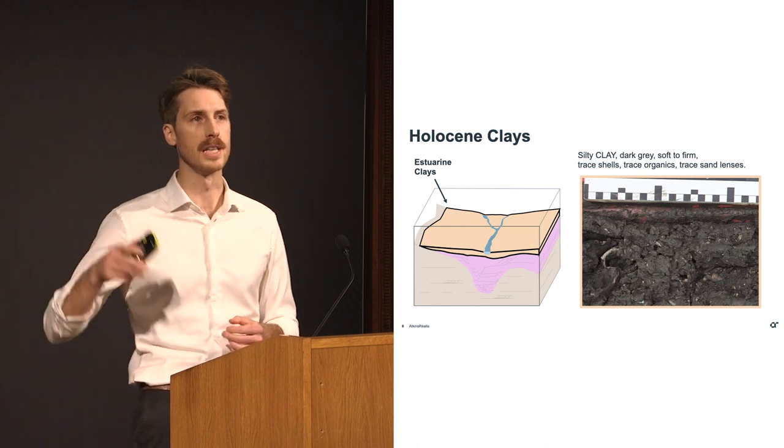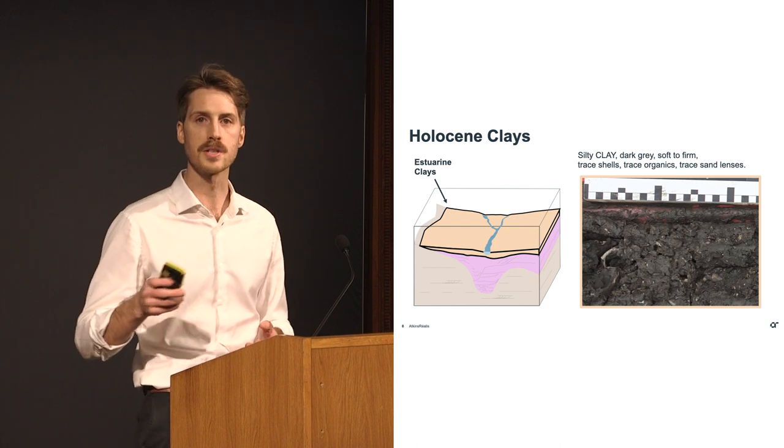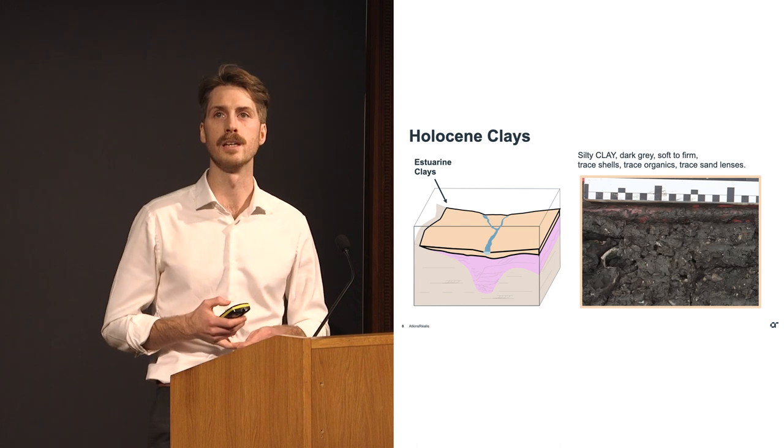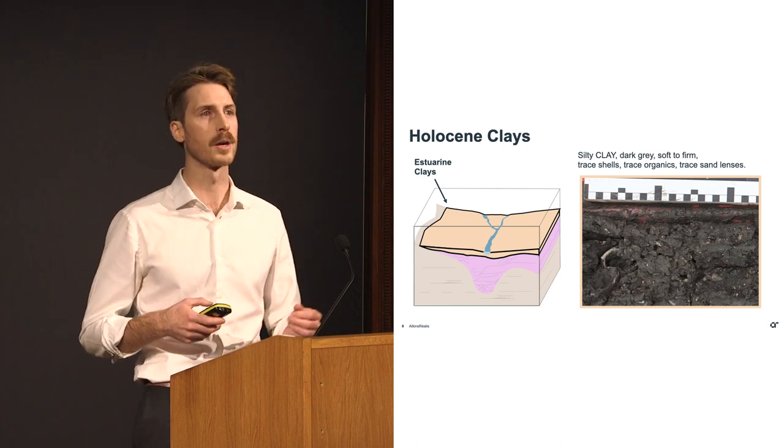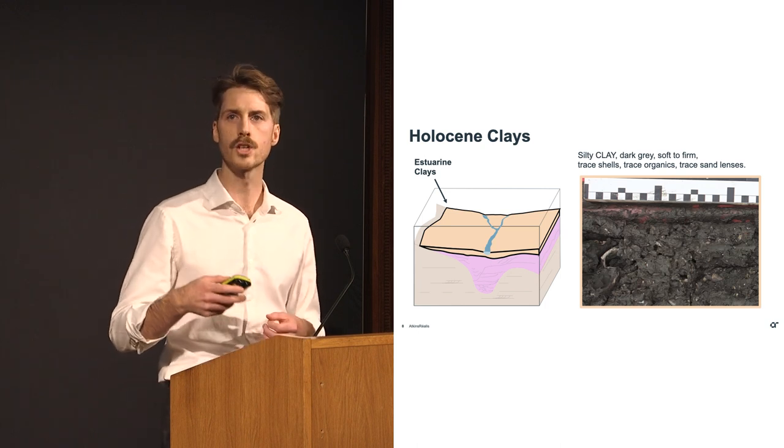Following the last glacial maximum at the start of the Holocene, sea levels lowered, fluvial processes reactivated, incising the top of the Pleistocene clays, and these were deposited in an estuarine environment. These are dark grey clay, typically very soft, organic component, trace shells, and sand lenses associated with channels.